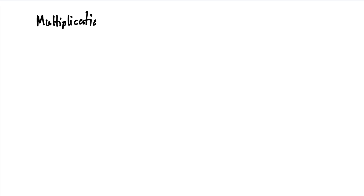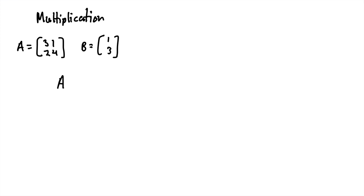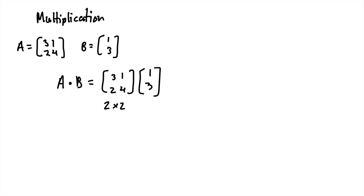Lastly, we have multiplication, which is probably the hardest of the three but not overly difficult. Let's start with two matrices: matrix A is three, one, two, four, and matrix B is one, three. If we were to multiply these two matrices, A times B, we have a two by two matrix multiplied by a two by one matrix.